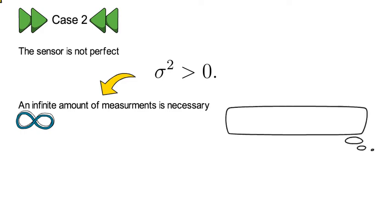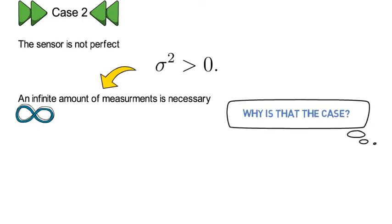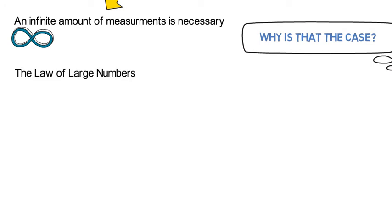You might wonder why is that the case. Well, that holds because of the law of large numbers, which for our setting says that the limit of 1 over t summing up all realized excess returns converges to theta zero if t goes to infinity. And that already is a big learning point, which I want to restate as follows.